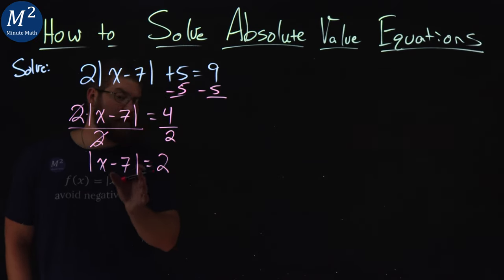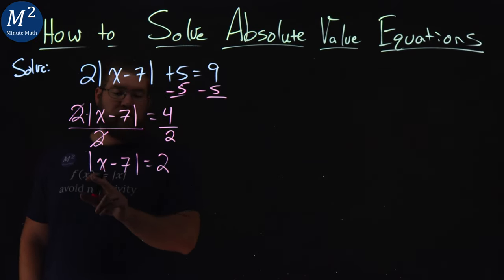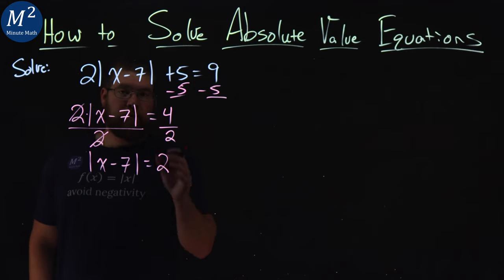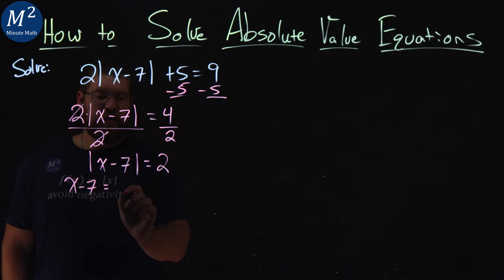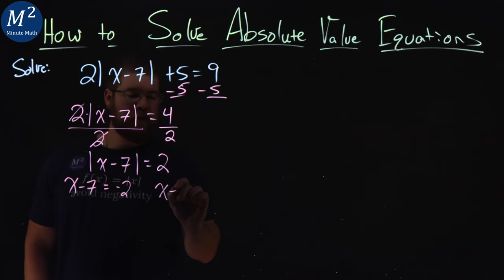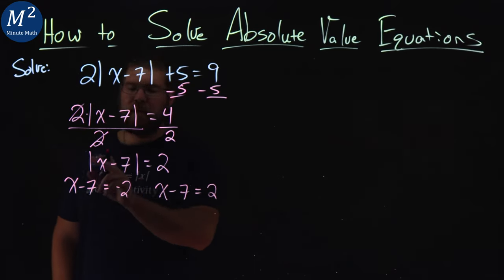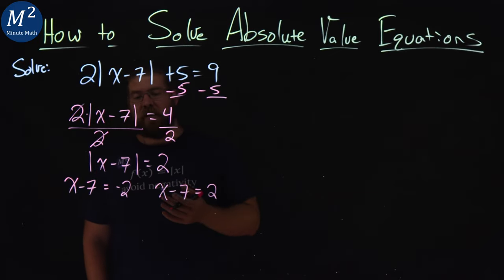From here, we're at an impasse. We have the absolute value of something is equal to 2. So that's where the rule comes in. I take my x minus 7, and it's going to equal negative 2, and x minus 7 is equal to positive 2. And now I can eliminate that absolute value.